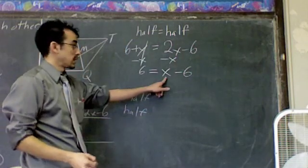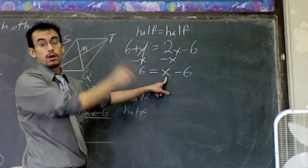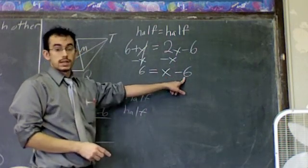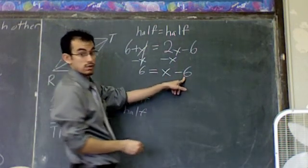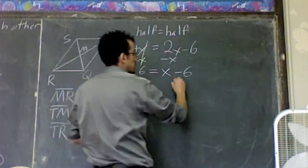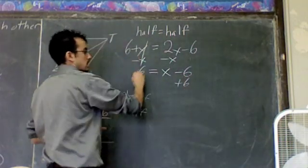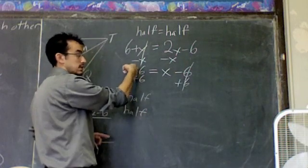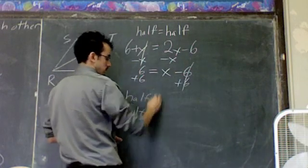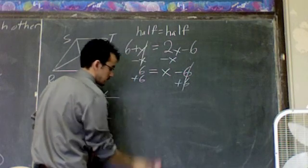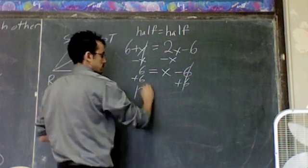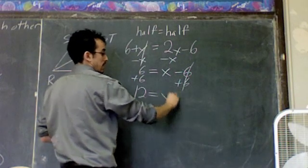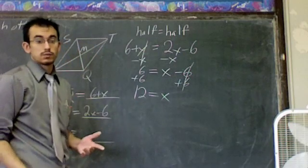To solve this, we need X alone. While X is on the right, all your constants should come over to the left. To get rid of this negative 6 or the subtraction of 6, do the opposite. Add 6 to the right and to the left. On the right they cancel. On the left 6 plus 6 is 12 equals X. So in this case, we know that X is 12.